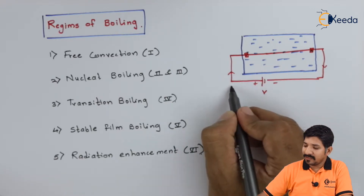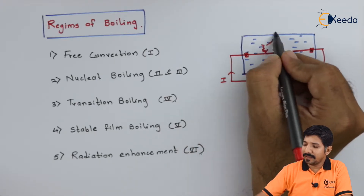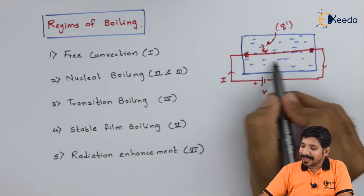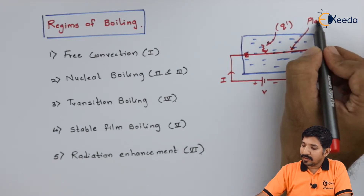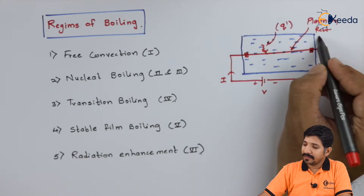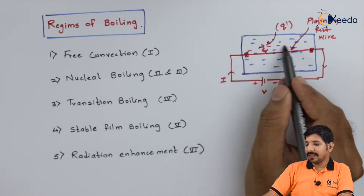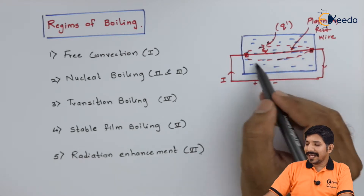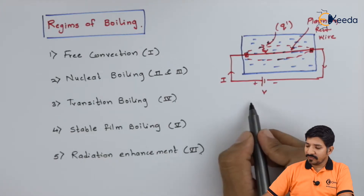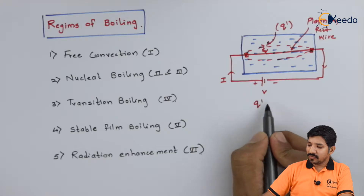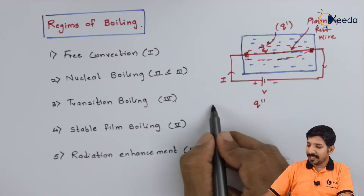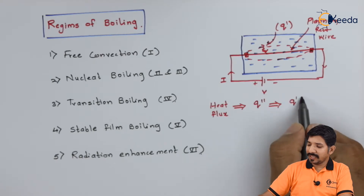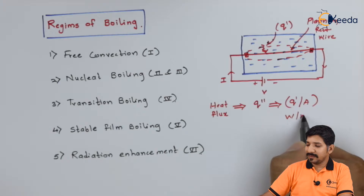If I know the voltmeter reading and the ammeter reading, I can find out the amount of heat supplied — that is, q-dot can be found out. What they observed is how the fluid around the platinum wire actually varies. Heat flux is indicated by q double-dot, which is nothing but the rate of heat transfer per unit area. The unit for the same is watts per meter square.